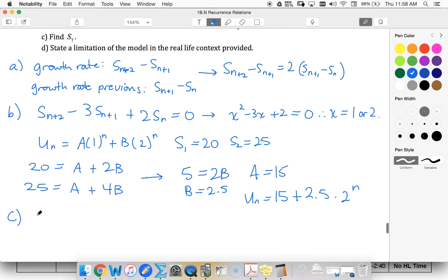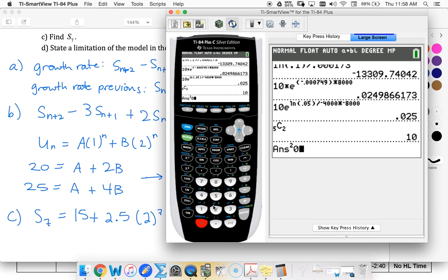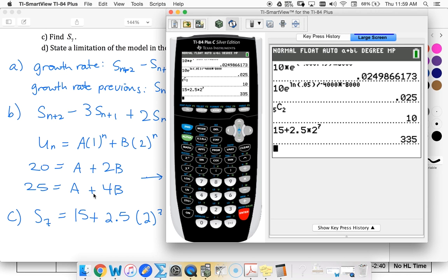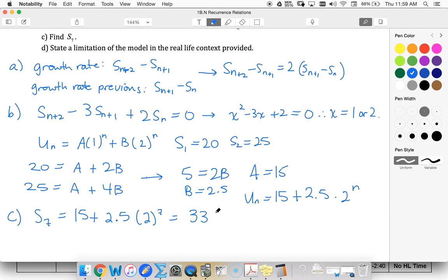Using this, I can find my S sub seven, 15 plus 2.5 times two to the seventh. I can't remember what that exactly equals. It's some number in the 300s. Let's see, 335.